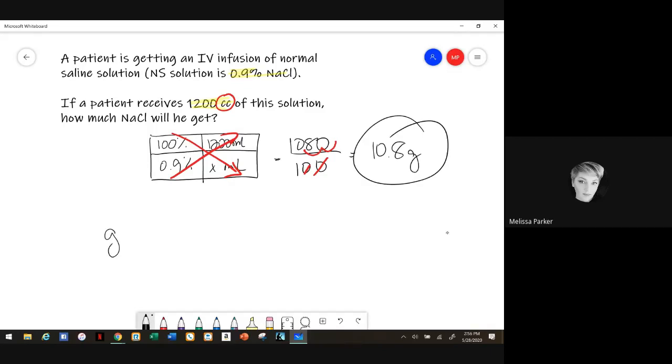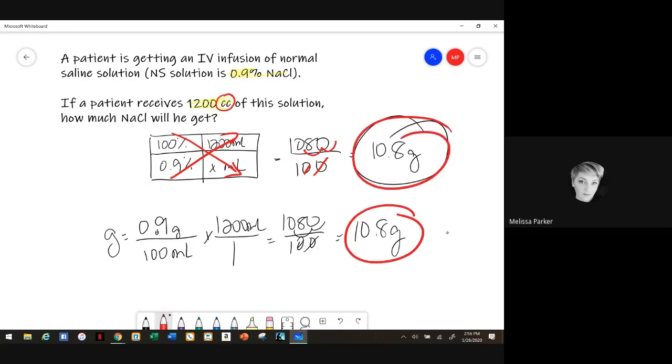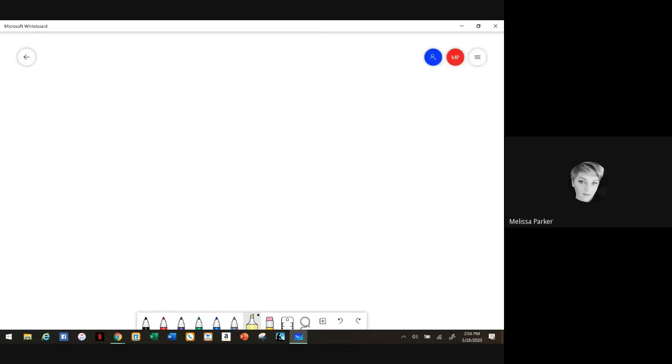So then you'll have 10.8 grams. And then if you solve for grams here, you would put your 0.9 grams over 100 mls, 1200 mls over 1, you'd still get 1080 over 100, you still get 10.8 grams.